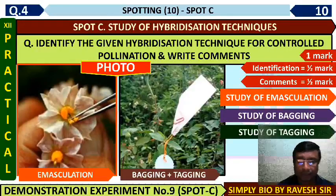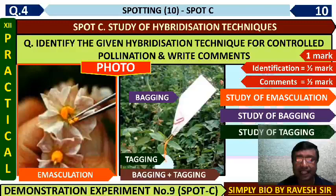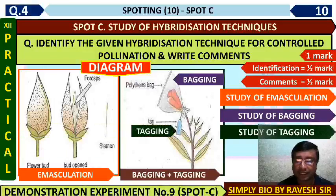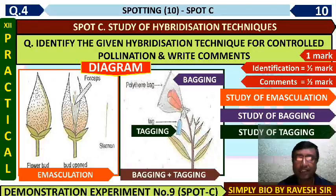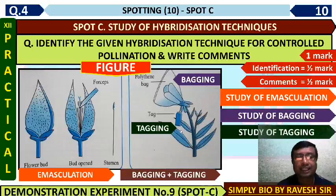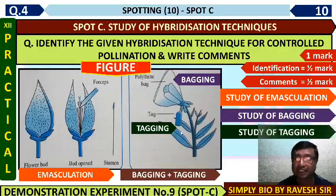This is bagging and tagging. You can see a flower with a bag covering it — a rose flower covered with a polythene bag and an information tag attached. Bagging means covering the flower inside a polythene bag, and tagging means attaching the information label. The same diagram is in your practical journal. A photo or actual specimen figure will be kept for spotting, and you have to identify and write the correct information about it.